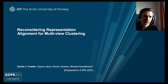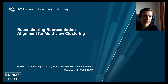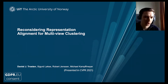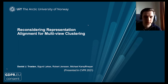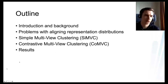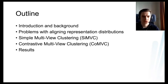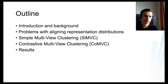This talk is about multi-view clustering, and in particular deep neural network multi-view clustering. We have some important takes on the tendency to align representations produced by encoders in deep multi-view clustering models. The outline covers an introduction and background, problems that occur when you align these representations, and then the two models presented in the paper: Simple Multi-view Clustering and Contrastive Clustering.